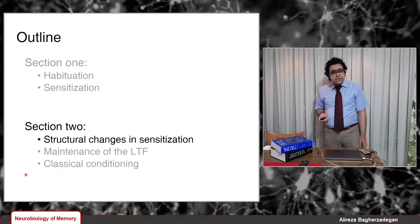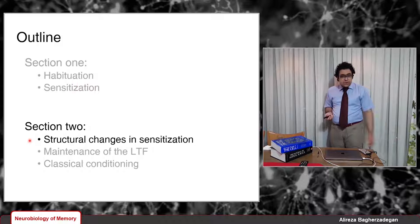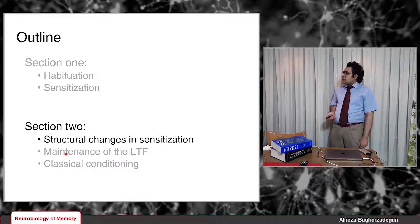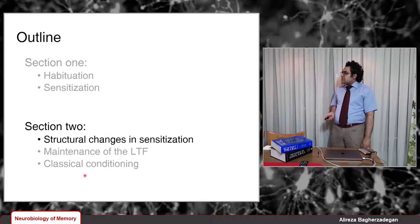In the very first section, I introduced habituation and sensitization and talked about their molecular mechanisms. In this second section of the lectures on implicit memory, I'm going to elaborate on those structural changes which happen in sensitization and habituation. I'm also going to talk about the mechanisms underlying the maintenance of LTF, or long-term facilitation, in sensitization. And as I promised, I'm going to finally talk a little bit about classical conditioning.